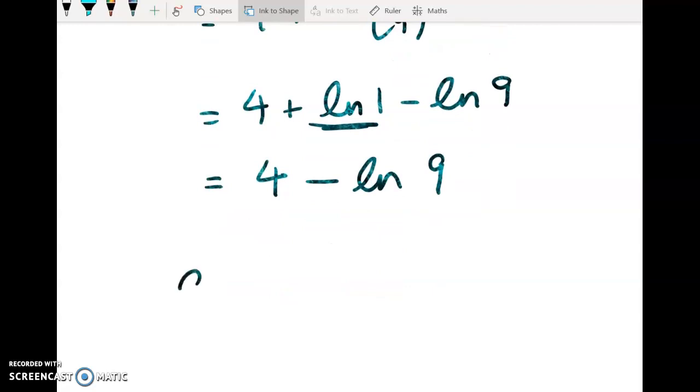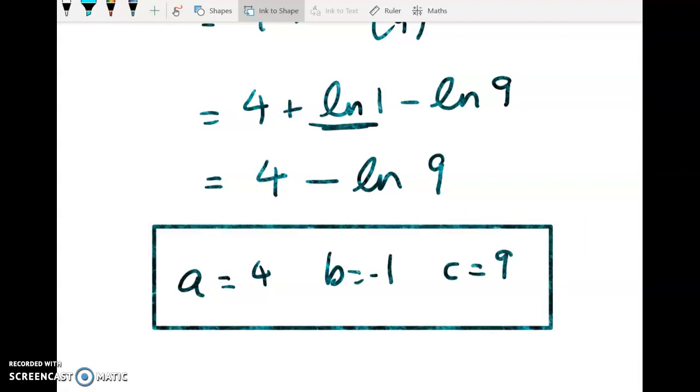So what are a, b, and c? Well, a is 4, b is negative 1, and c is equal to 9. So there you go, that's that question done. So now we're on to the differentiation paper.